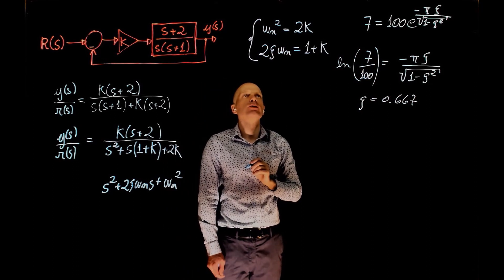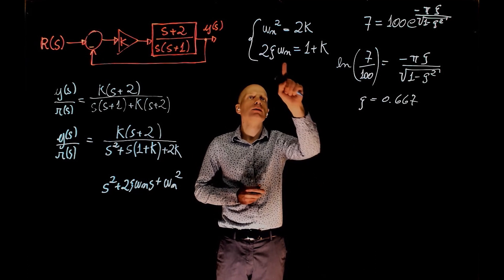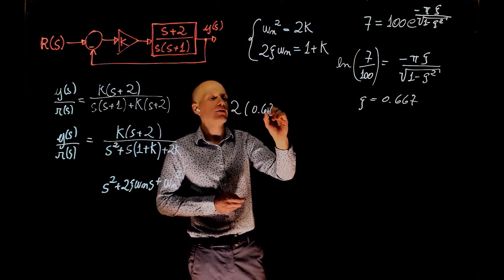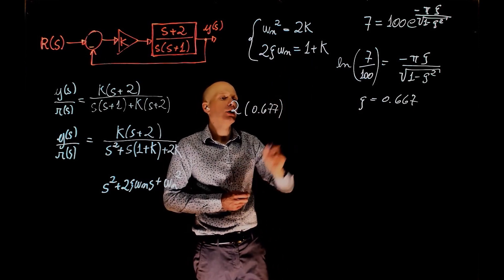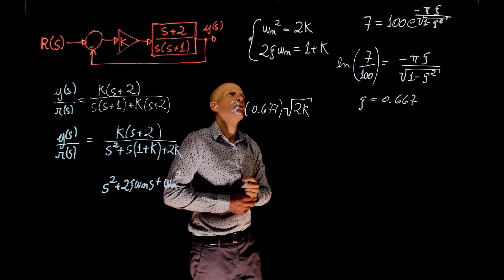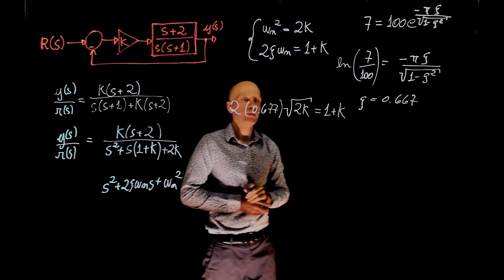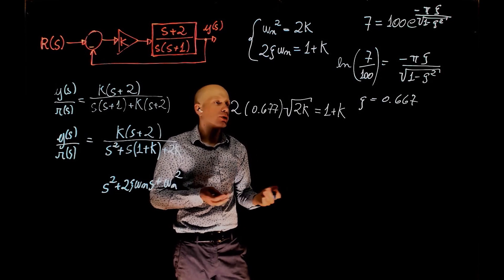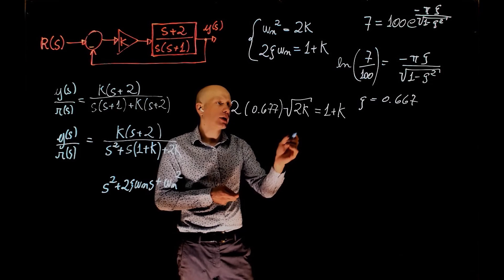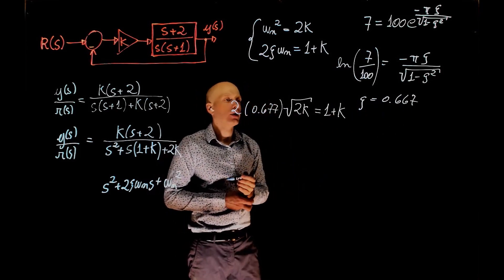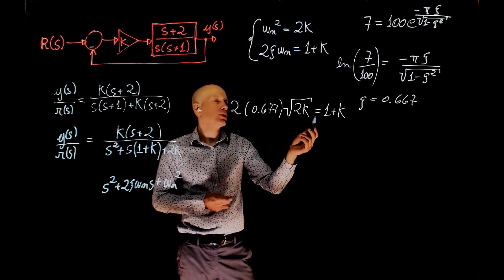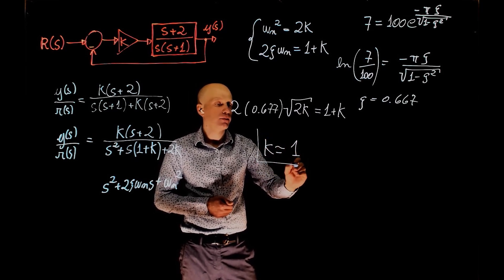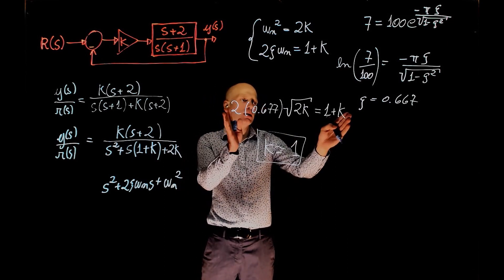Now we go back to the expressions obtained from the standard formulation and find the value of k. Taking the second expression, we have 2 times ζ (which is 0.667) times ω_n — where ω_n = √(2k) from the top equation — and this equals 1 + k. We square both sides to eliminate the square root, producing a second-order polynomial. We find its roots, and since a negative k would lead to instability, we only consider the positive solution. That value is approximately k = 1.